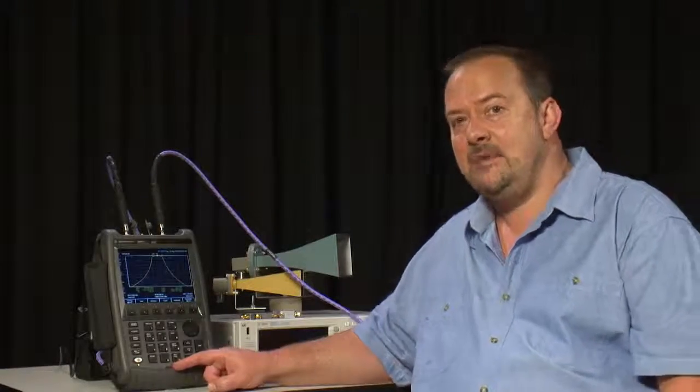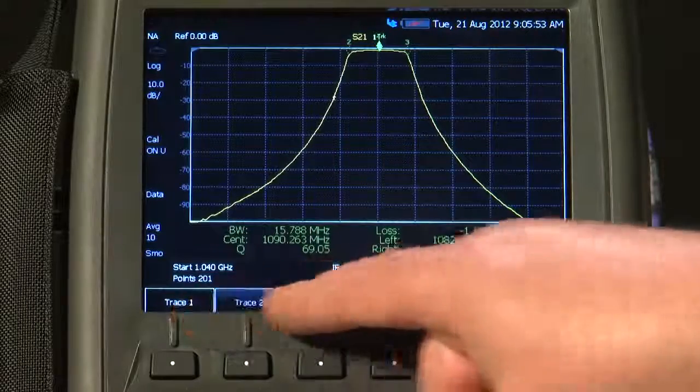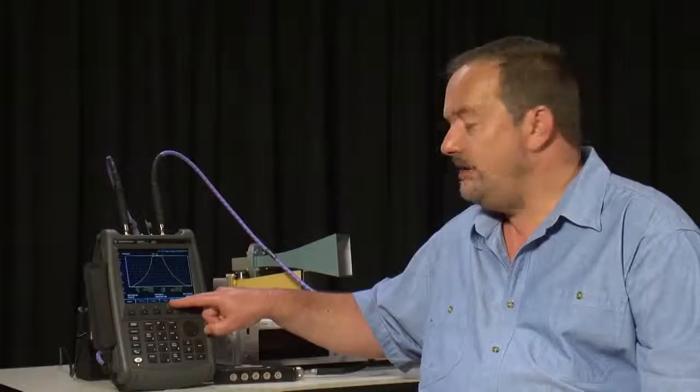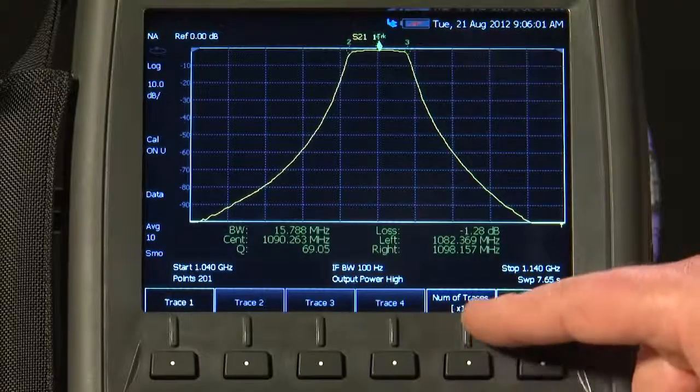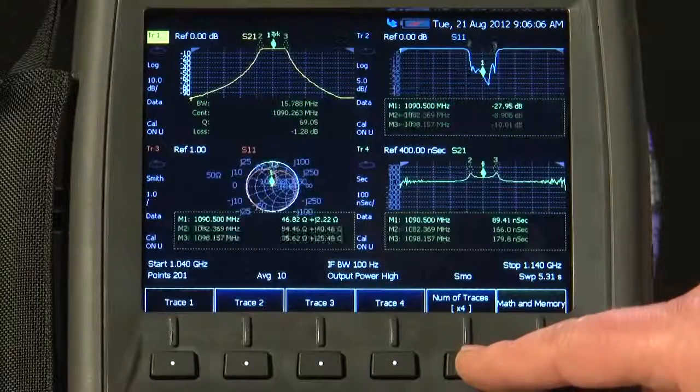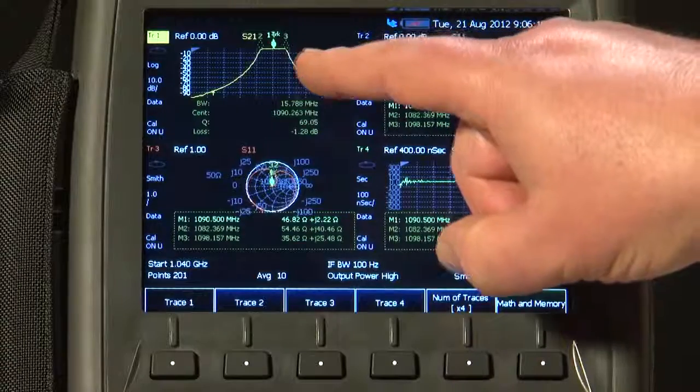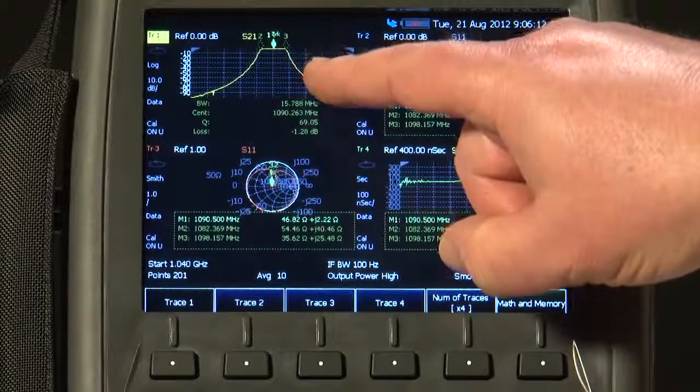Amazingly, as you would expect with a benchtop Vector Network Analyzer, if I press the Trace button, we have actually got four traces available here. Currently I have only got one trace displayed, but if I press the Number of Traces button, I can select all four to be displayed on the screen at the same time. In the top left, we have Trace 1, still measuring the insertion loss, S21, of the filter.